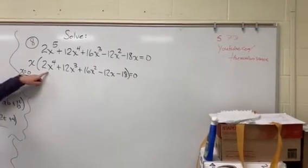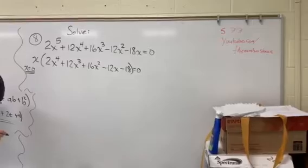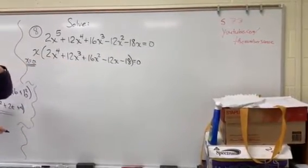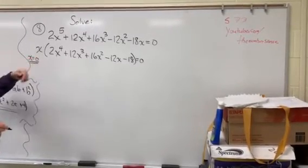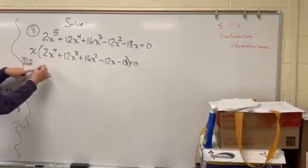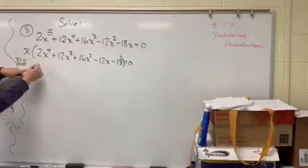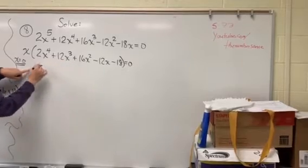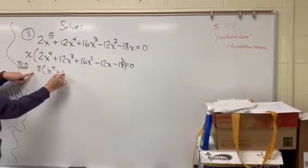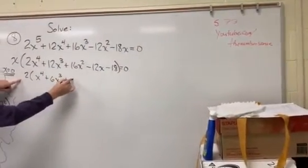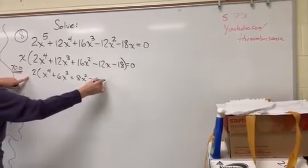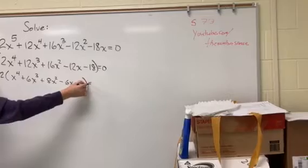And now we have a fourth degree polynomial with a constant, and so we have coefficients of 2, 12, 16, negative 12, and negative 18. And you know, I should have factored out a 2, but that's okay. We can still factor out a 2 here. So the greatest common factor was actually 2x. So if I factor out a 2 from the rest of this, I'm going to have x to the fourth plus 6x cubed plus 8x squared minus 6x minus 9, and that's equal to zero.